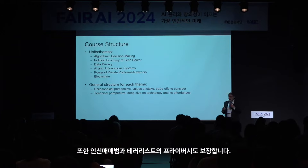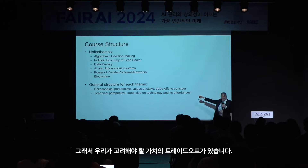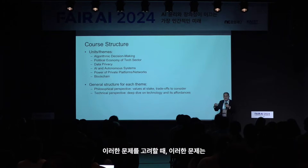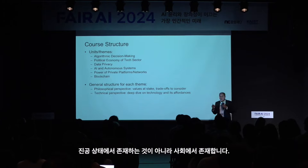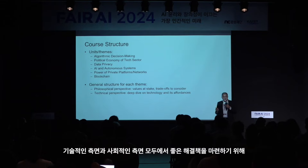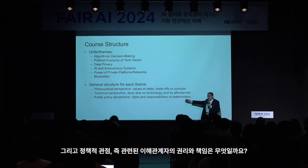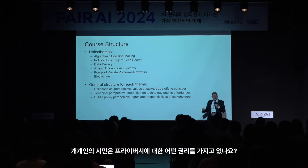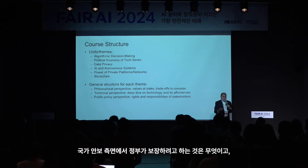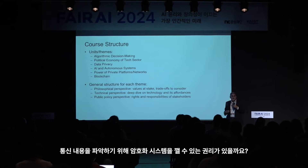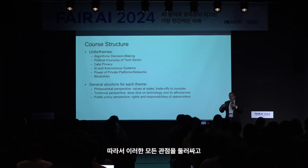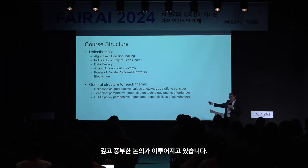End-to-end encryption ensures privacy—but it also ensures privacy for human traffickers and terrorists. So there's a value trade-off to consider. These issues don't exist in a vacuum; they exist in society, and we need to consider all societal aspects to come up with good solutions, both technological and societal. Then we have a policy perspective: what are the rights and responsibilities of stakeholders? What rights do private citizens have? What does the government need for national security, potentially having the right to break encryption? There's a deep, rich discussion around all these viewpoints.